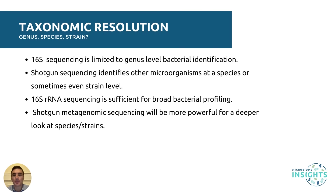The next factor to consider is taxonomic resolution. 16S sequencing is generally limited to identifying bacteria at the genus level, for example Bifidobacteria. Shotgun metagenomic sequencing, on the other hand, can identify bacteria and other microorganisms at a species level, for example Bifidobacterium longum, or sometimes even a strain level, for example Bifidobacterium longum 35624, by profiling single nucleotide variants in metagenomic data. Therefore, for broad profiling of bacterial microbiomes, 16S sequencing would be sufficient. However, if it is necessary to look more deeply at the species and strains within your microbiome of interest, shotgun metagenomic sequencing will be more powerful.